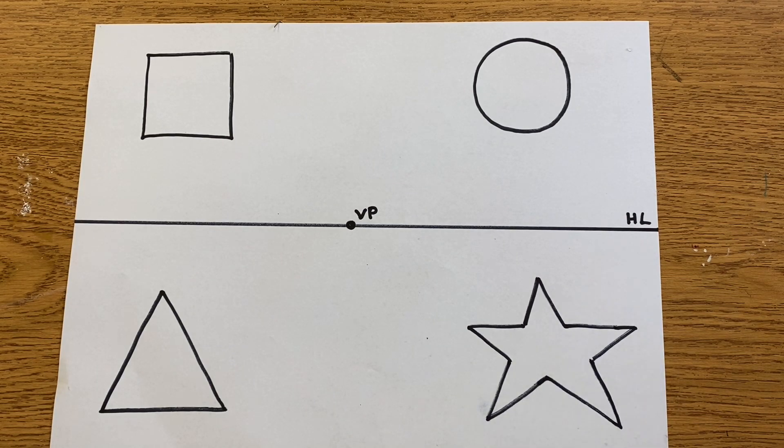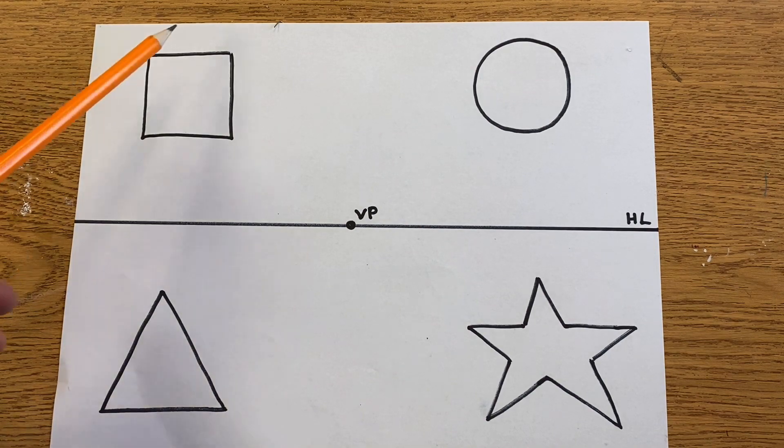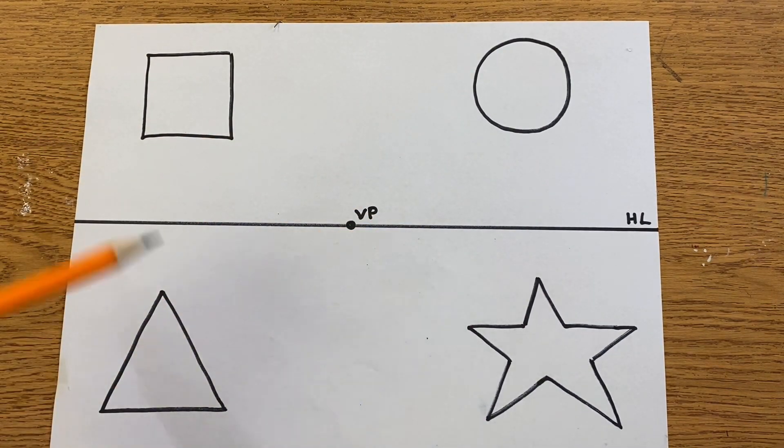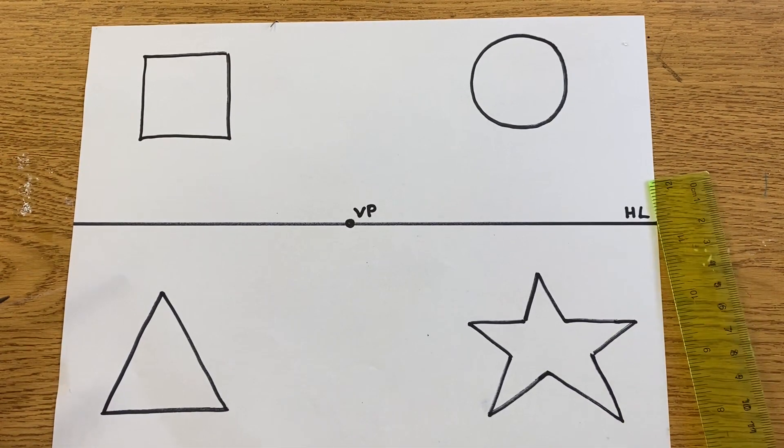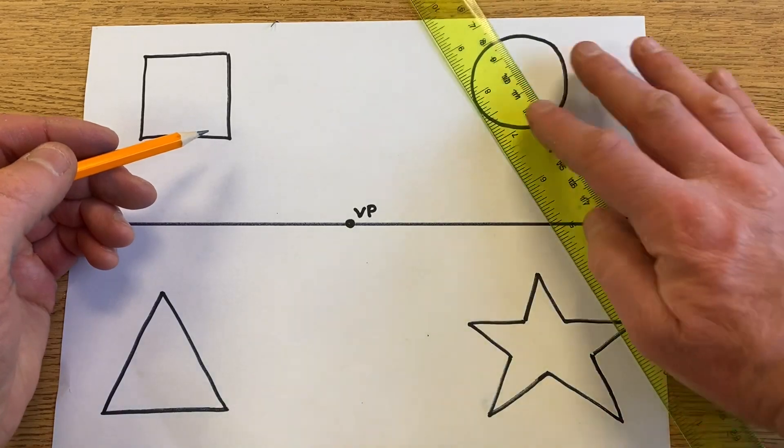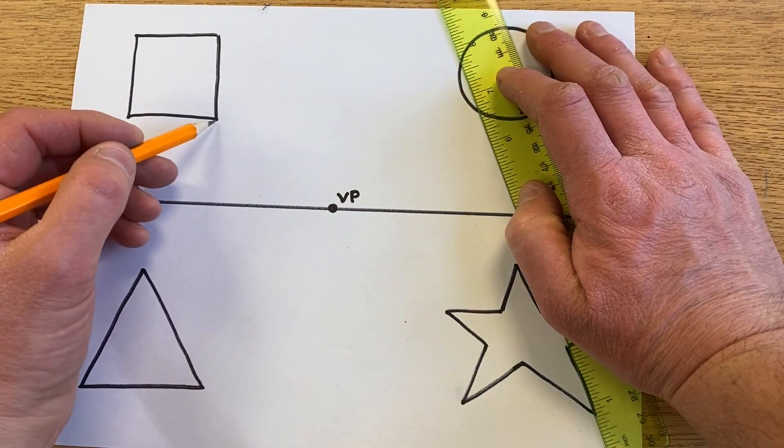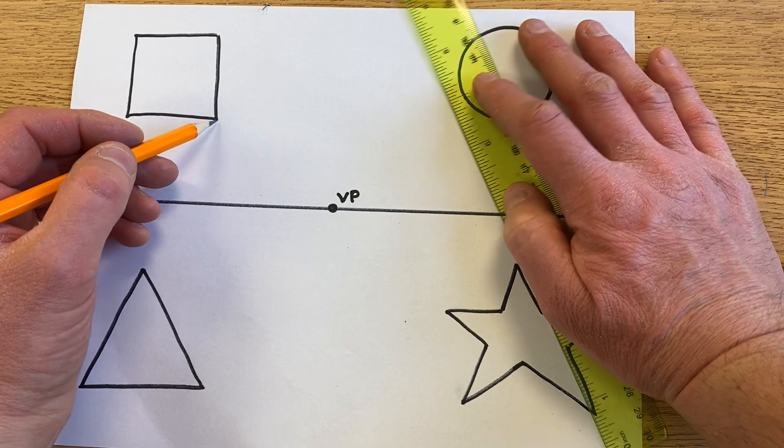We're going to use this practice worksheet and I'll show you how to make these shapes appear 3D with some simple lines. First, we'll start with the square in the upper left corner. I'm going to line up my ruler on the corner of the shape.